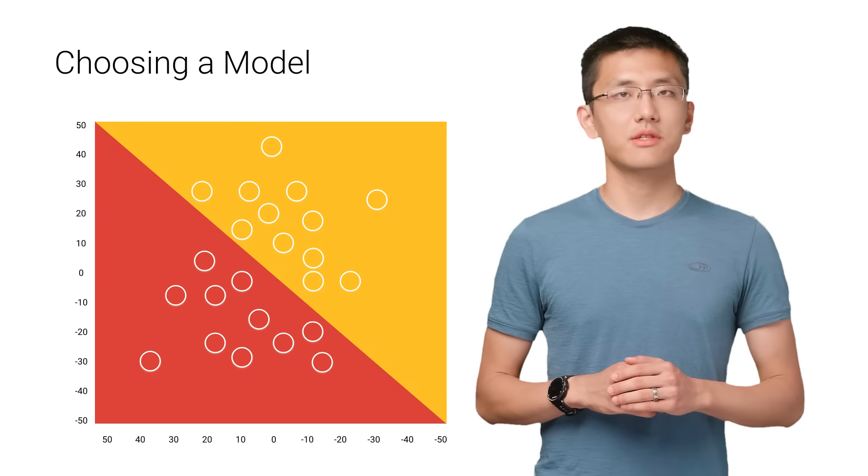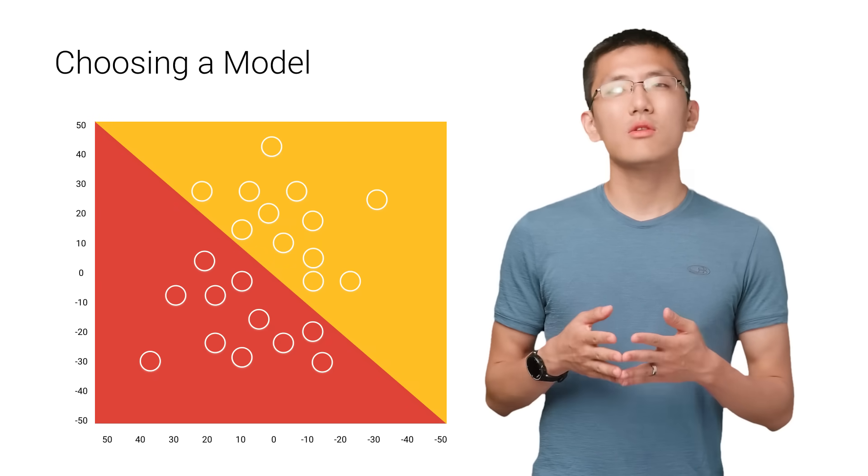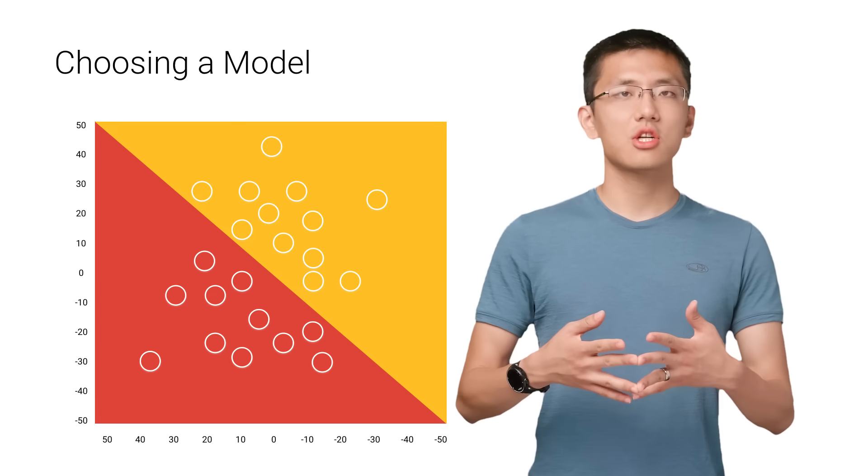In our case, we have just two features: color and alcohol percentage. We can use a small linear model, which is a fairly simple one that'll get the job done.